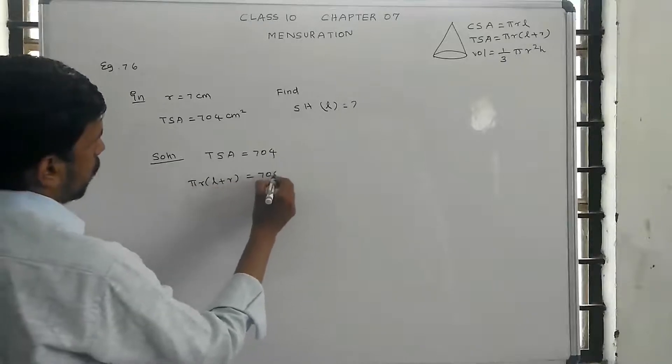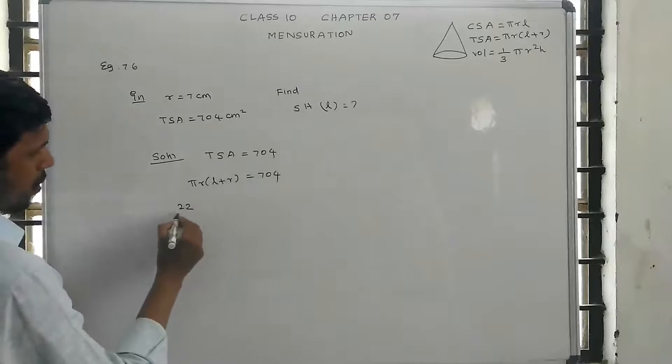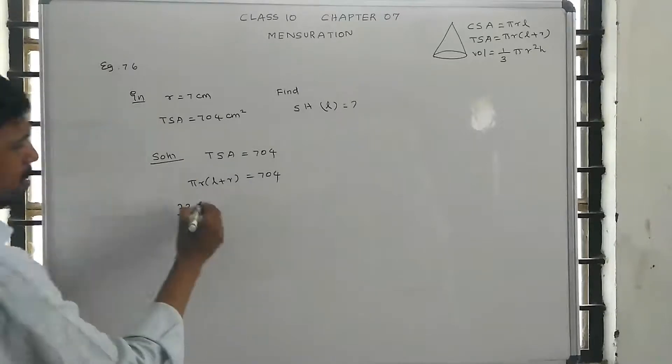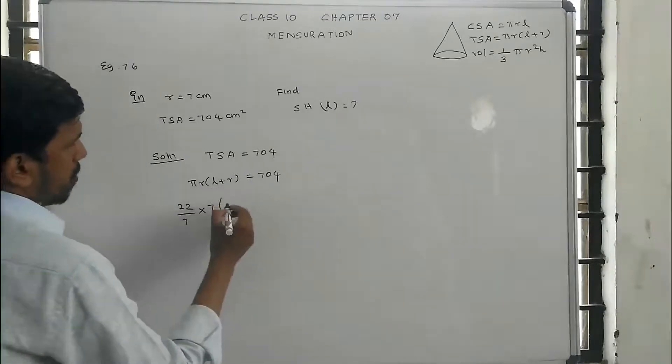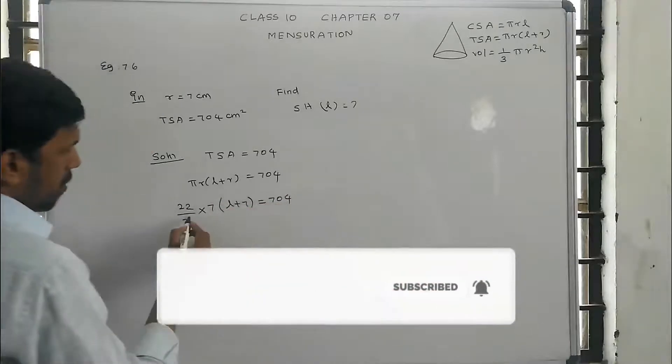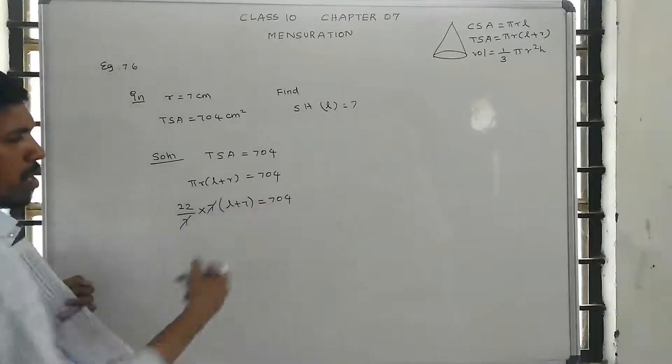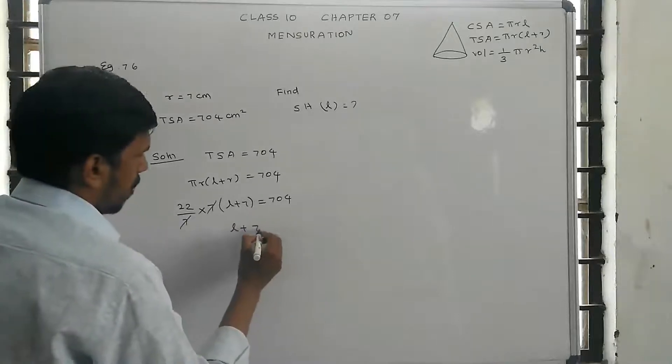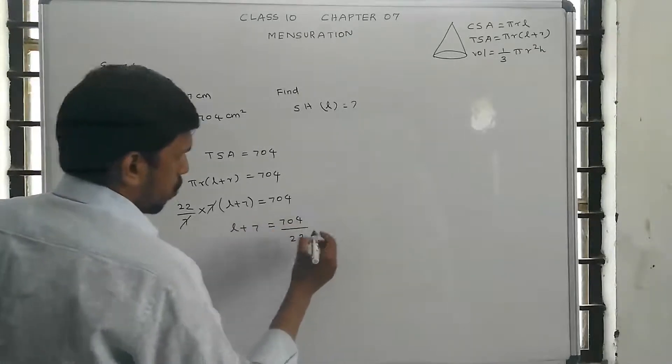So if you apply it: π, which is 22 divided by 7, into r which is 7, into (l plus 7) equals 704. The 7 gets cancelled, so 22(l plus 7) equals 704. Divided by 22, so 704 divided by 22.